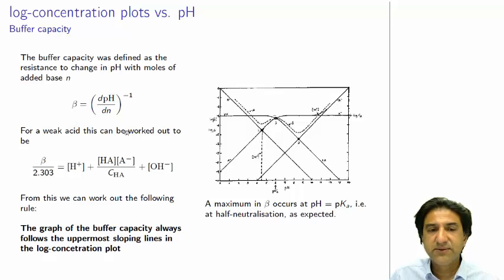So this buffer capacity can also be defined as the derivative of the pH with respect to the added moles of base. And we sometimes take the reciprocal to make sure it's a big number.